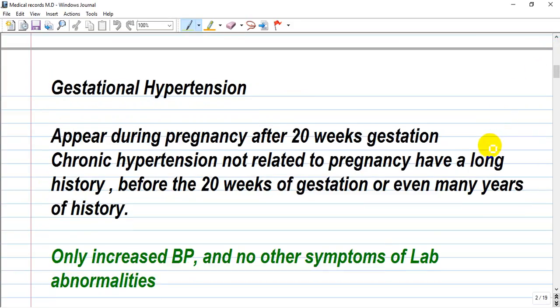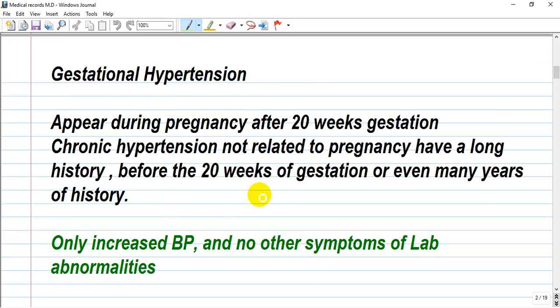Let's start with gestational hypertension. Gestational hypertension appears during pregnancy, gestation, and is considered to appear after 20 weeks of gestation. Chronic hypertension, if we have to compare, is not related to pregnancy and has a long history of the disease - five years ago, for example, detected firstly, or just two weeks before conception. Only increased blood pressure and no other symptoms or laboratory abnormalities is considered gestational hypertension.